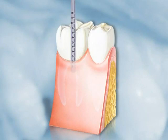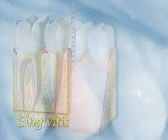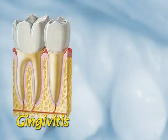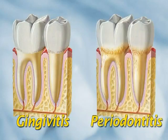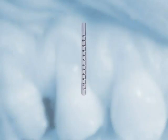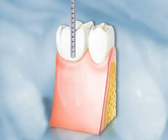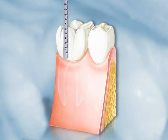Periodontal measurements can be taken by any dentist as well as by a dental hygienist. Spaces or pockets that are deeper than normal indicate gum disease — either gingivitis, the early stage, or periodontitis, the more advanced disease. A periodontal probe, which is nothing more than a tiny millimeter ruler with a blunt tip, is used to measure these spaces. The probe slides between the tooth and gum at various places around each tooth to measure the depth.